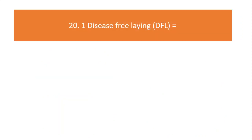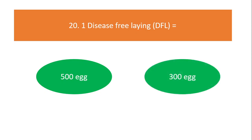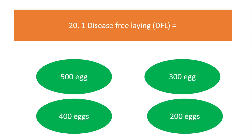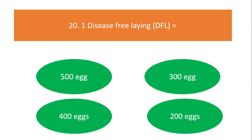One disease-free laying in silkworm is equal to how many eggs? Options are 500, 300, 400, or 200 eggs. The answer is 400 eggs.